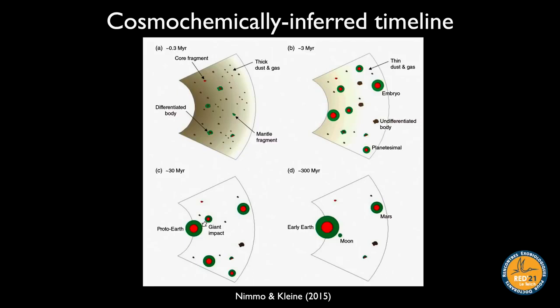Putting these pieces together gives a rough cosmochemically-inferred timeline. Within a few hundred thousand years of CAIs, large planetesimals were already forming, some big enough to differentiate. Within a few million years there were large planetary embryos. The final late accretion and giant impact phase then lasted from about 30 to 100 million years. That's the general timeline for the growth of Earth and the terrestrial planets.